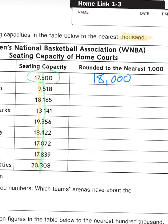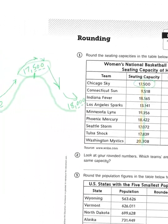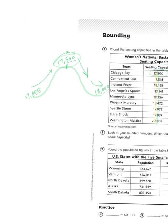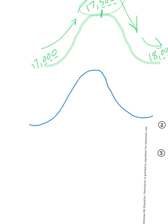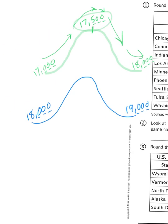Let's look at the Phoenix Mercury. They have 18,422 total seats in their home stadium. I'll create another roller coaster — this time starting at 18,000 on one side and ending at 19,000 on the other side. Just like with 17 and 18, the halfway mark here is going to be 18,500. I'm looking at those three place values behind the 18 and the 19, so my halfway mark is 18,500.